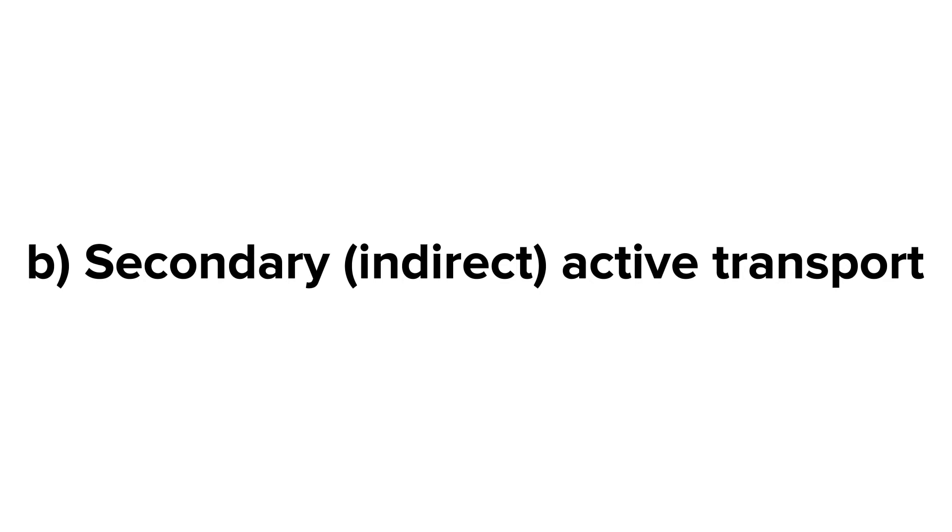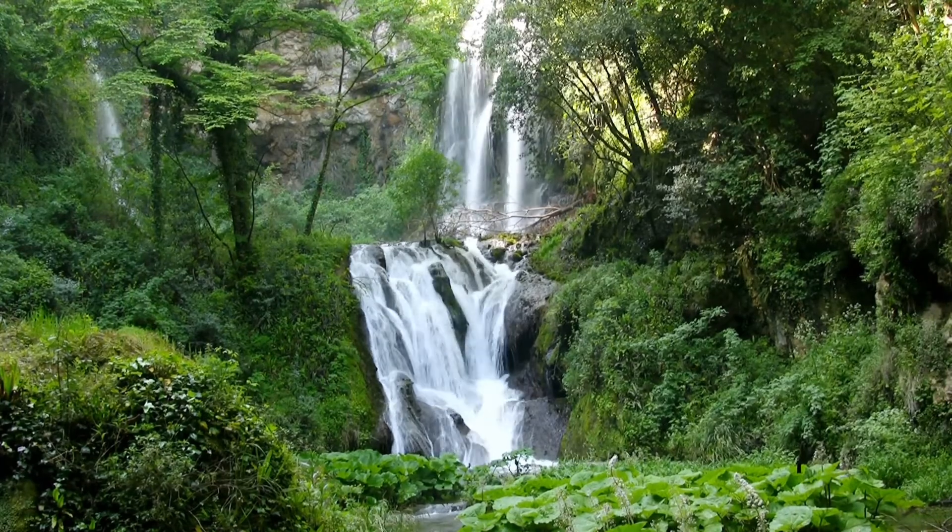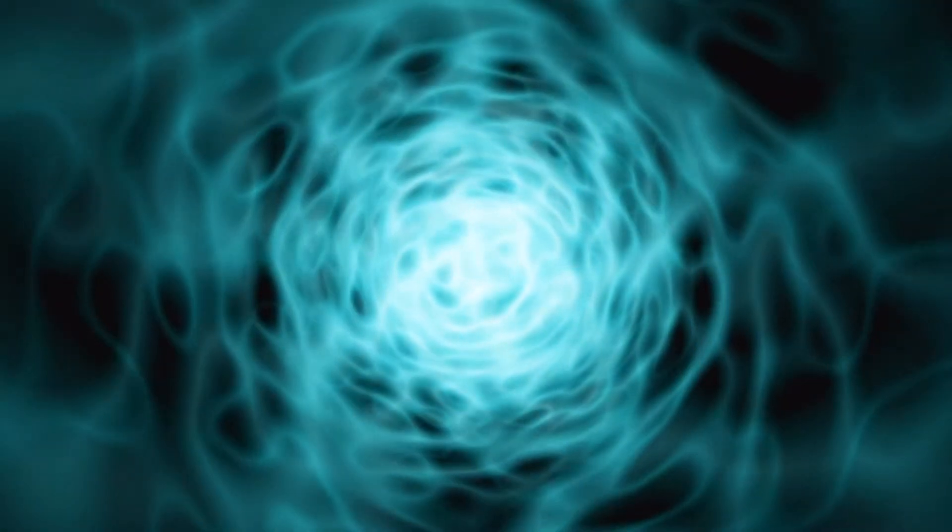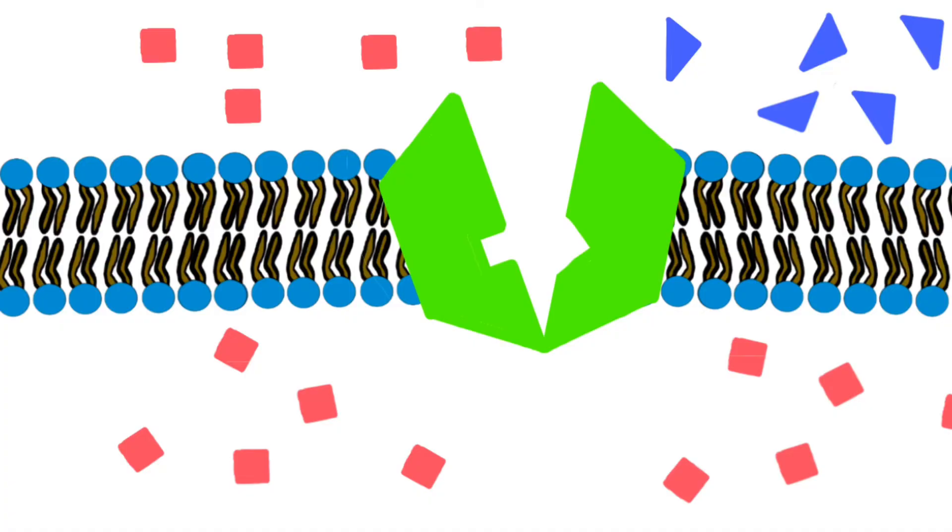The second type of active transport is the secondary or indirect active transport. You know that we can gain energy from the waterfall, right? The energy that the falling water creates can be converted to electricity that we can use. That's how secondary active transport works.